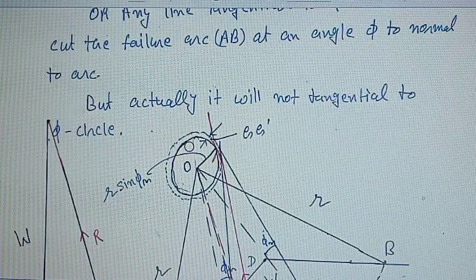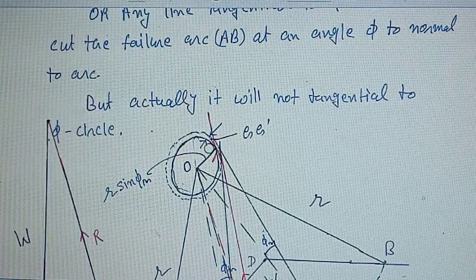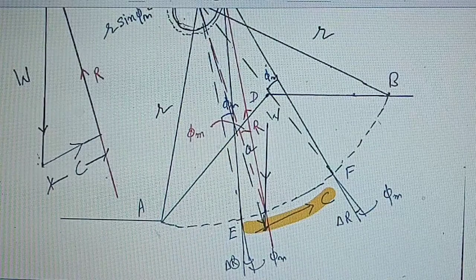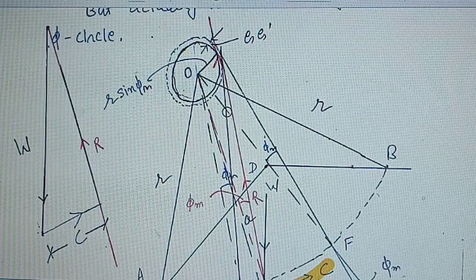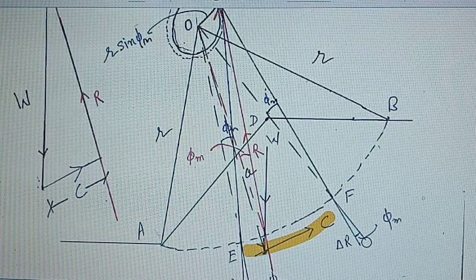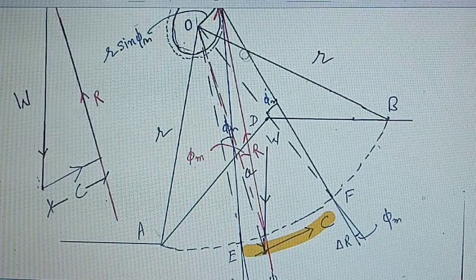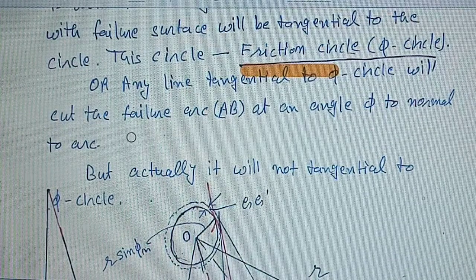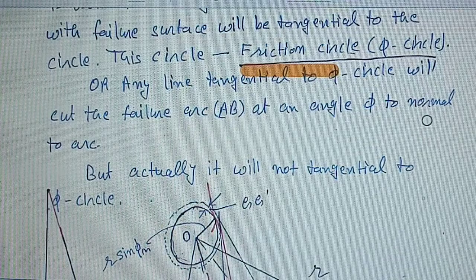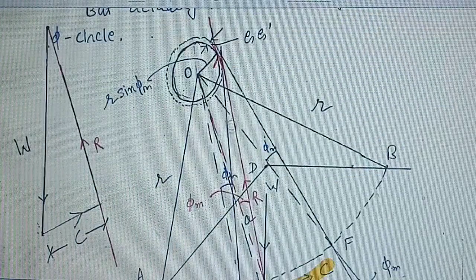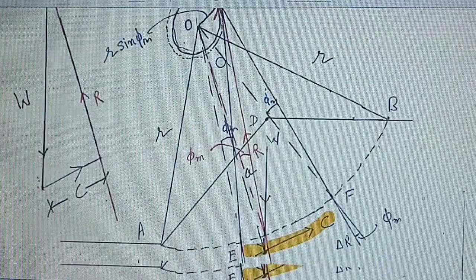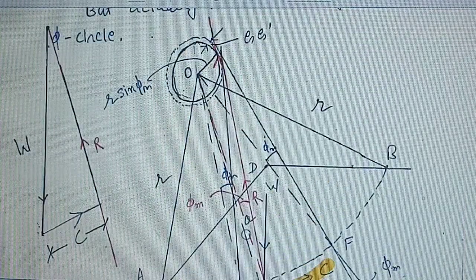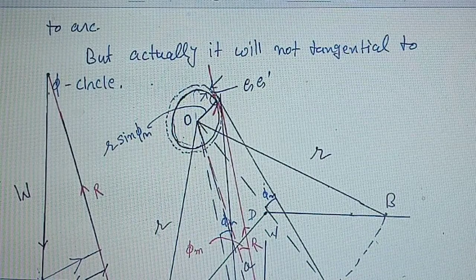In this figure, if we draw a circle of radius R·sin(phi_m), then any vector delta R at an angle of phi_m to the normal is tangential to this circle, as shown. Similarly, for another elementary arc, delta R is at an angle of phi_m, and if extended it will be tangential to this circle. Any line tangential to the phi circle will cut the failure arc AB at an angle of phi to the normal. That is, if we draw a line tangential to this phi circle, then it will be at an angle of phi_m to the normal. But actually, these lines are not exactly tangential to this circle.